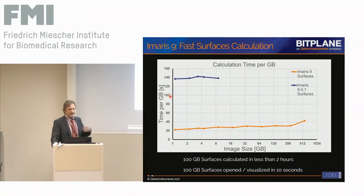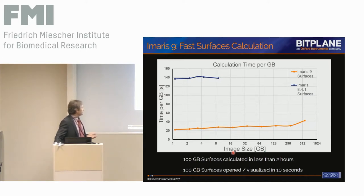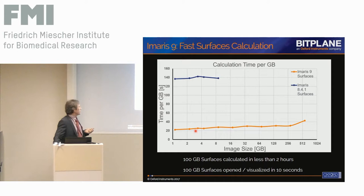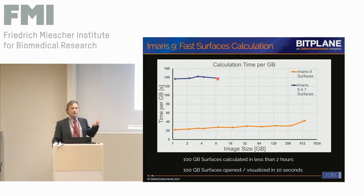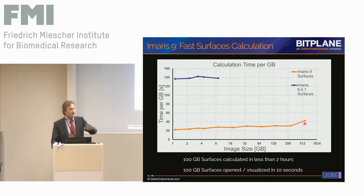Just a comparison inside Imaris: the upper line is Imaris 8.4, which was available up to last year. Below we see version 9. On the axis is the image size in gigabytes, and here the time of computation in seconds per gigabyte. What you see is that these lines are quite far apart — we were able to speed up things a lot, even for smaller datasets. Here we are at 20 seconds where we previously needed 140 seconds. When we go to bigger files, you see version 8.4 stops — that's basically because it crashed. You could not handle larger datasets than about 10 gigabytes for the segmentation. Now it goes up to about 512 gigabytes, though things start to scale less nicely when you go larger.